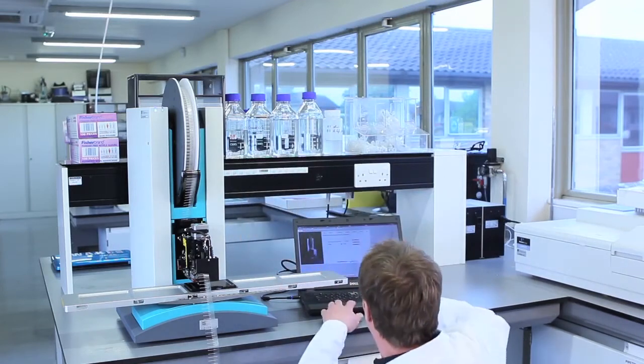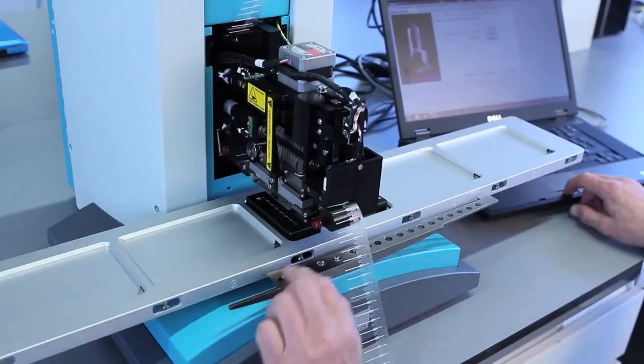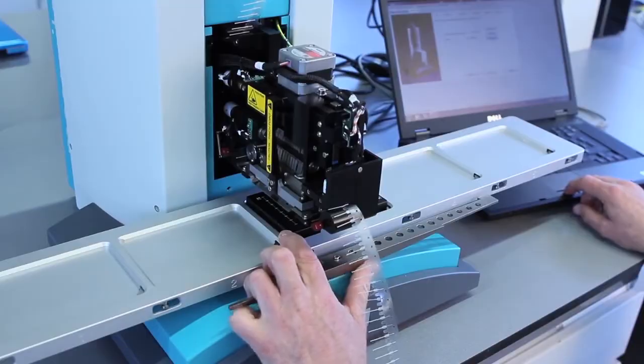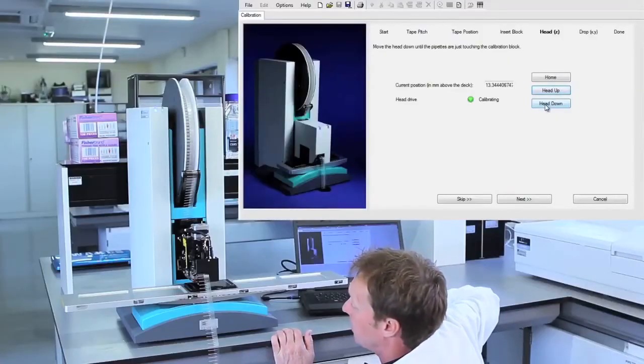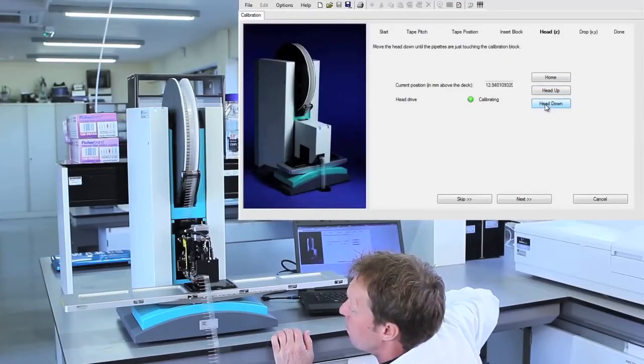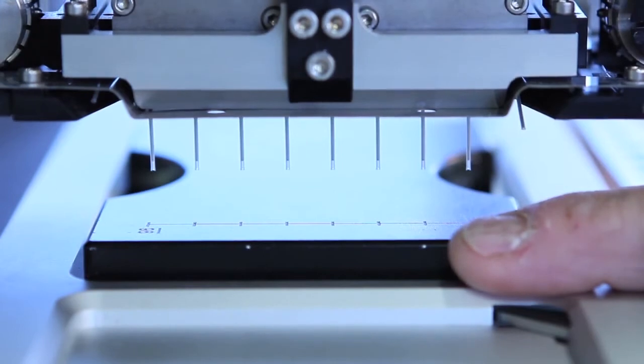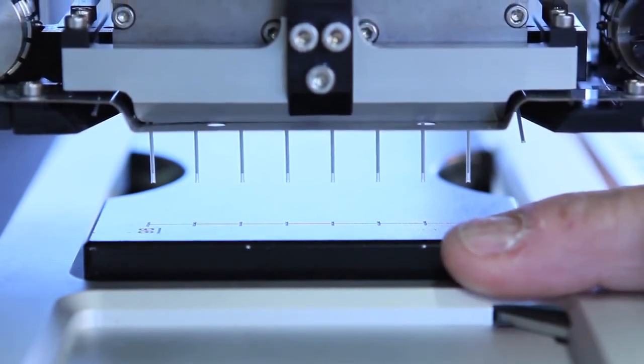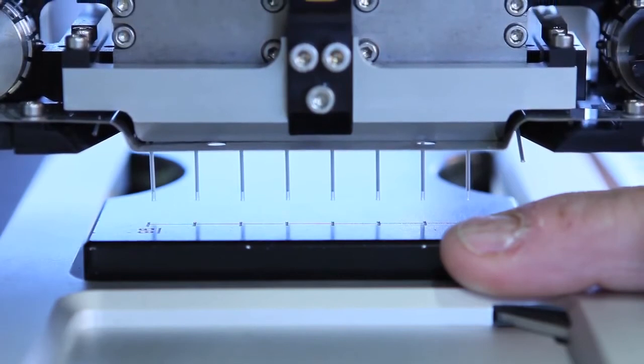We now have to drive the head down until the tips touch on the block by using the head down button. We can do very small mouse clicks to make very small moves, but we drive it down until it almost touches.